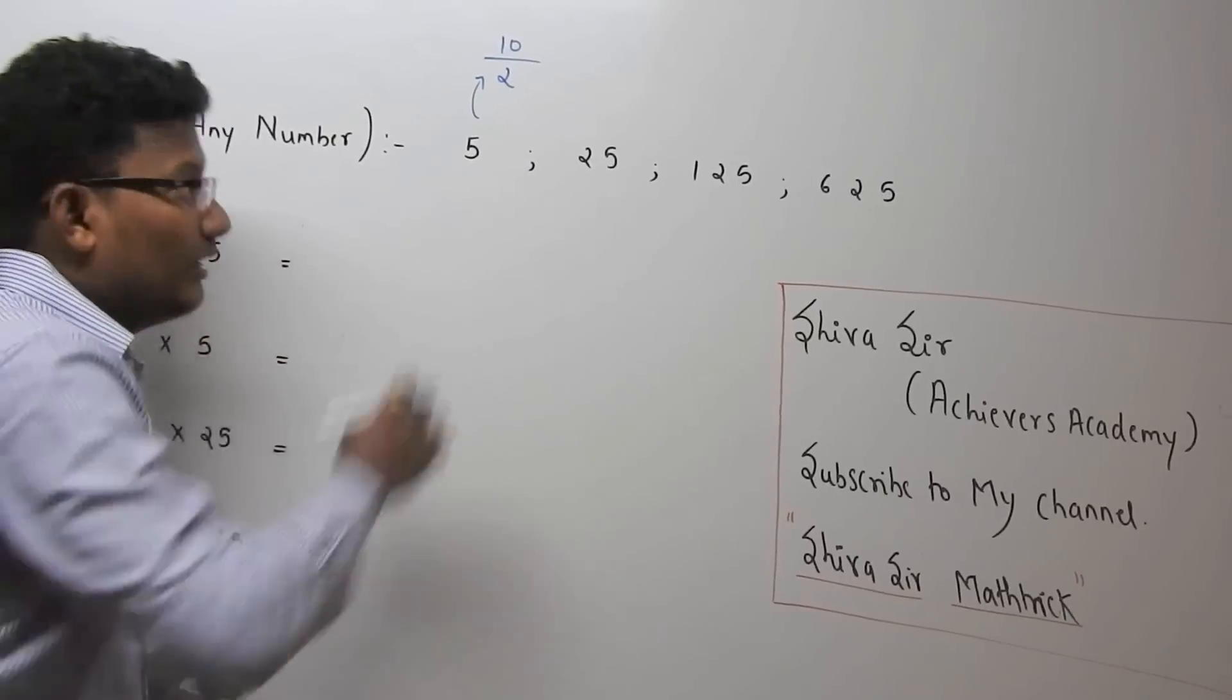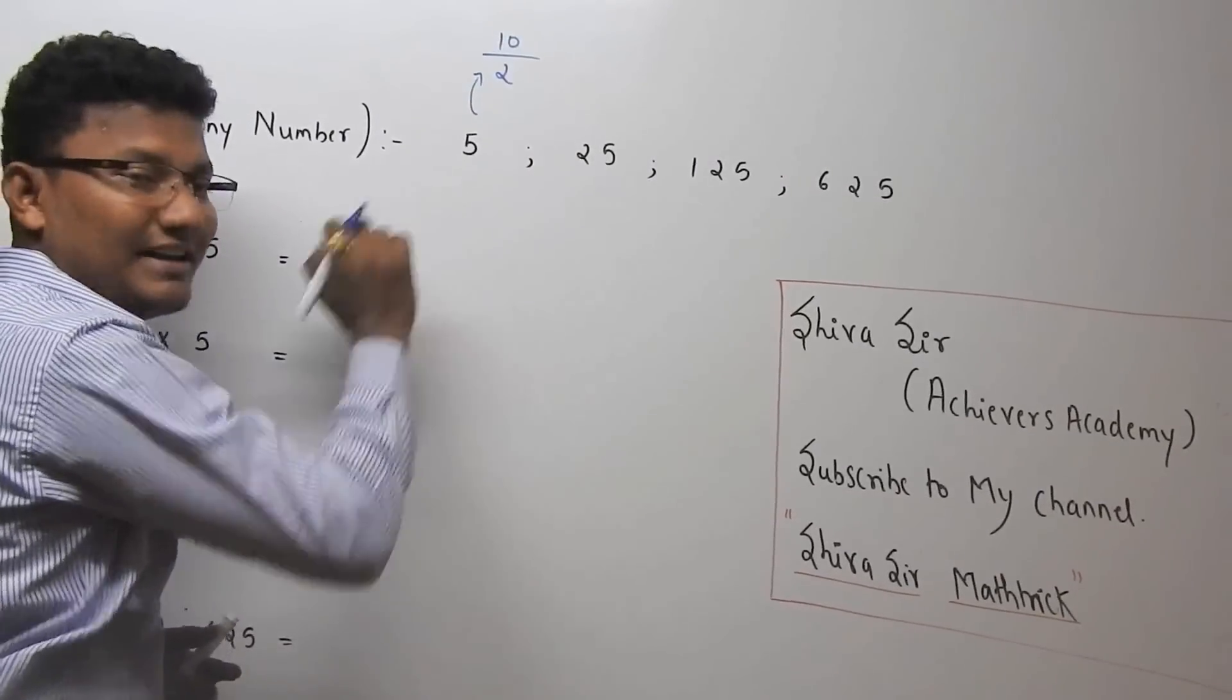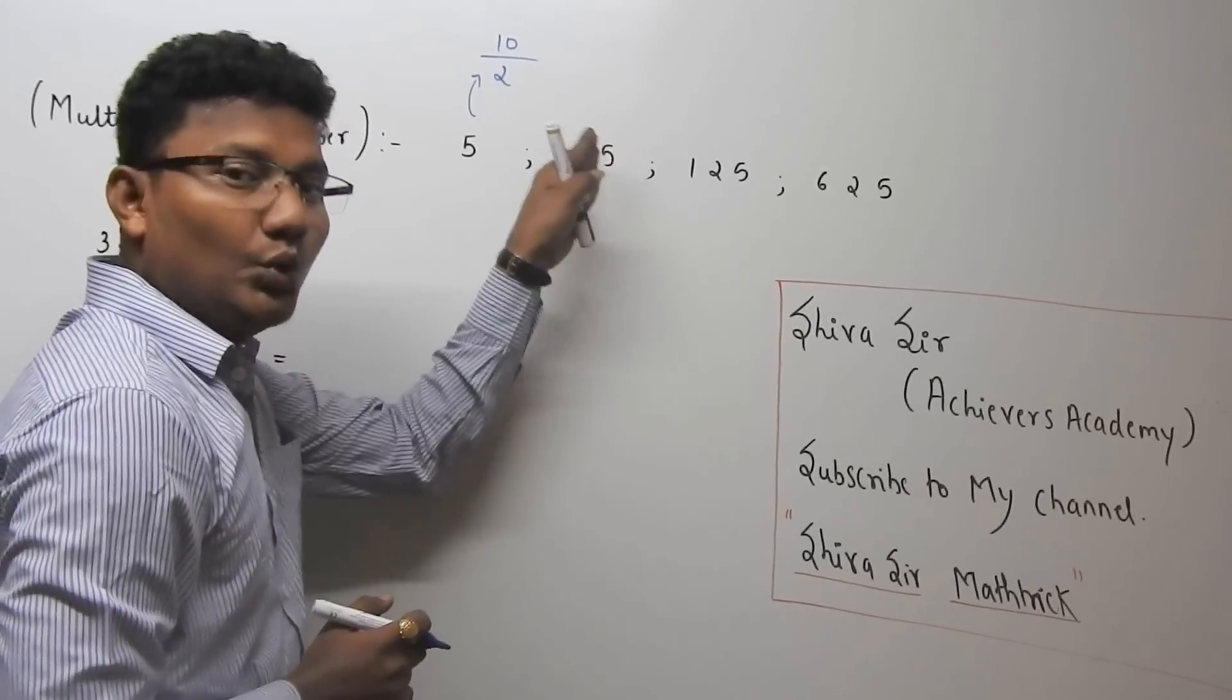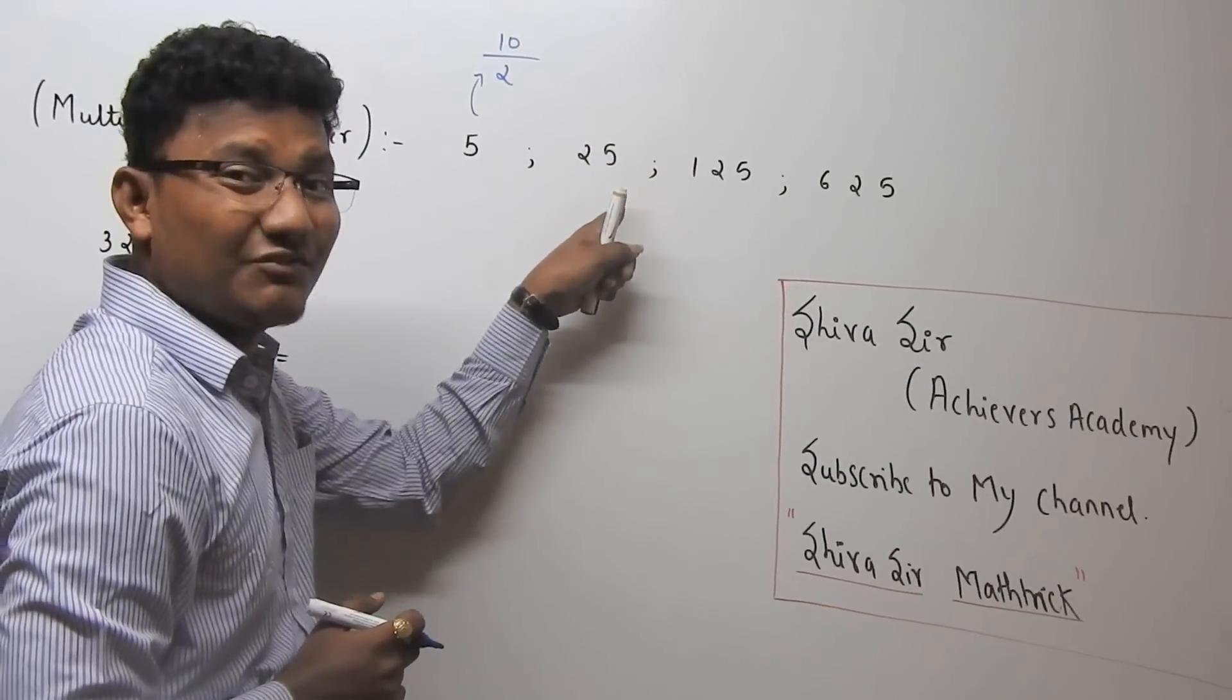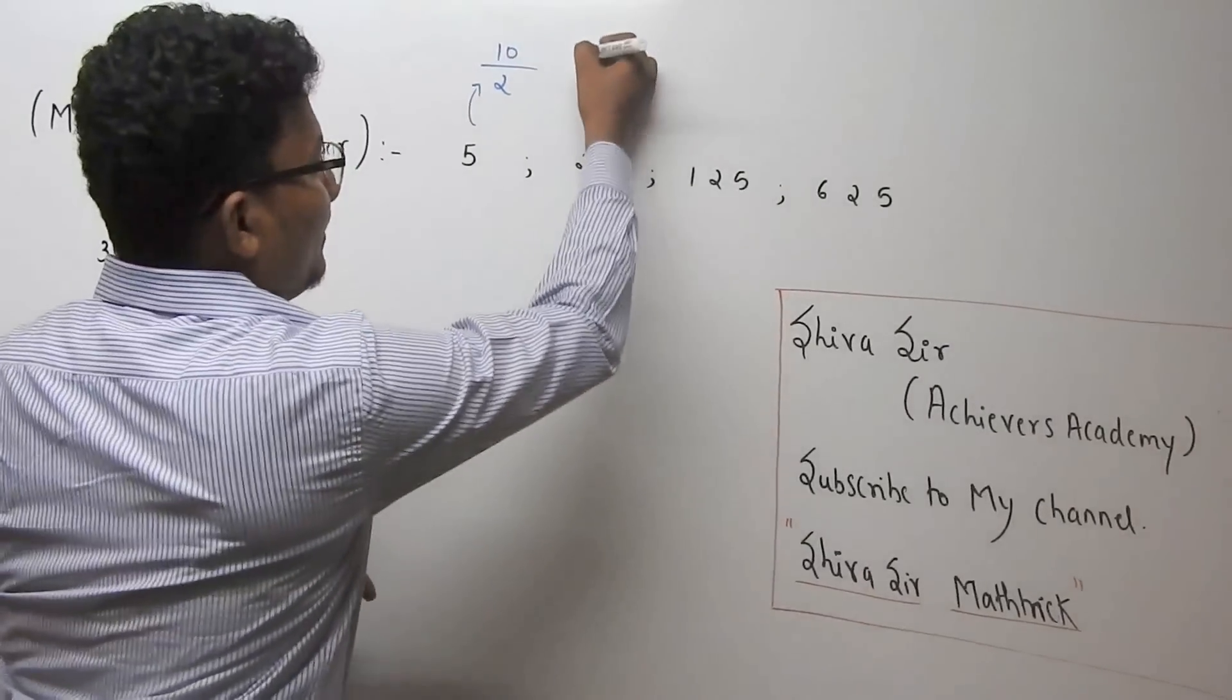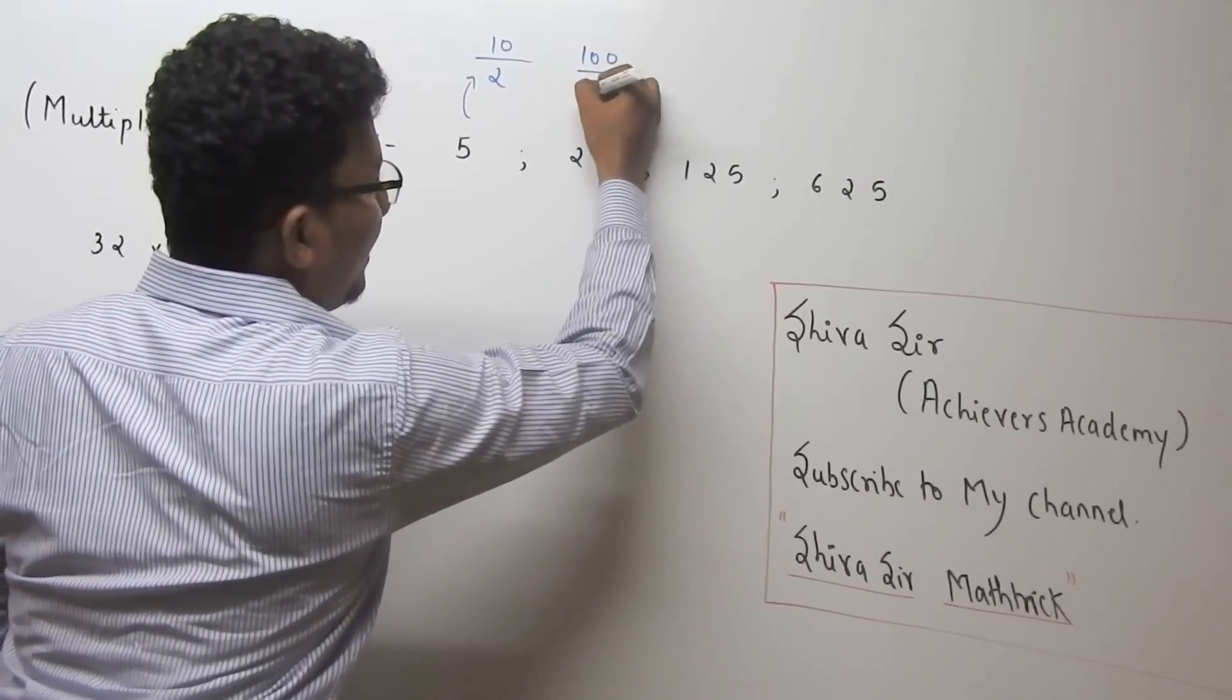So this 5 can be written as 10 by 2. Yes, 10 by 2. This 25 can be written as 10 by 2, 10 by 2, because this is 5 squared. That means 100 by 4.